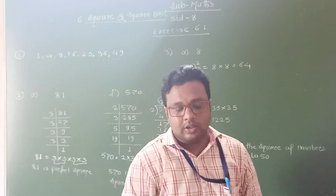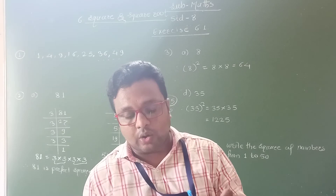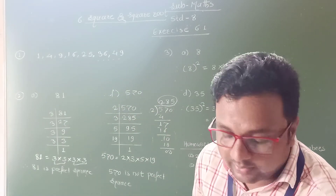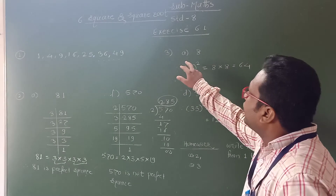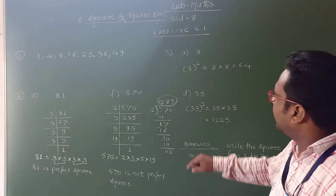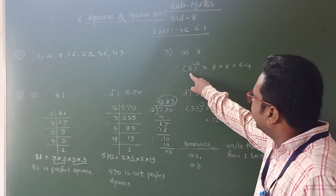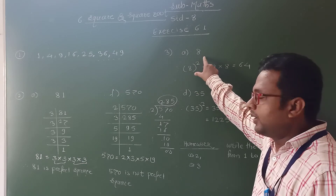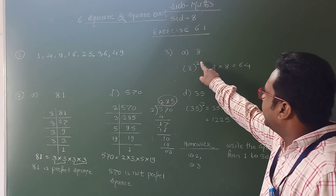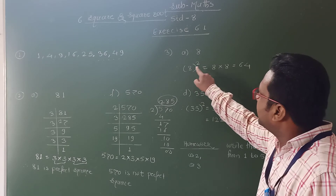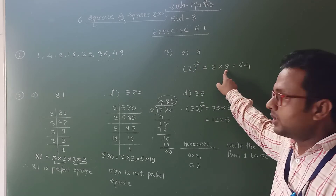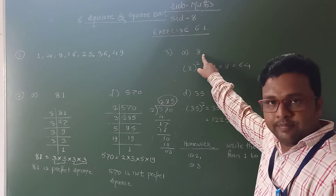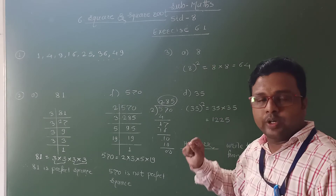Question number 3: Find the square of the following numbers. It is very easy. Here I take an example. We have to find out the square of 8. We represent it as 8², which means 8 raised to the power 2. To find the square of 8, you multiply this number 2 times: 8 × 8 = 64. So 64 represents the square of 8.